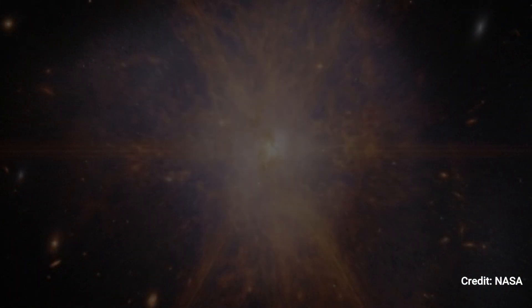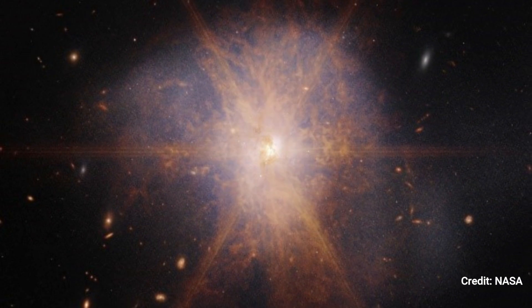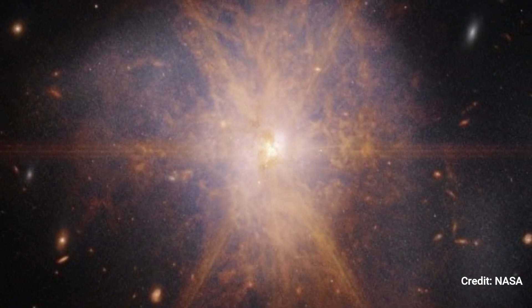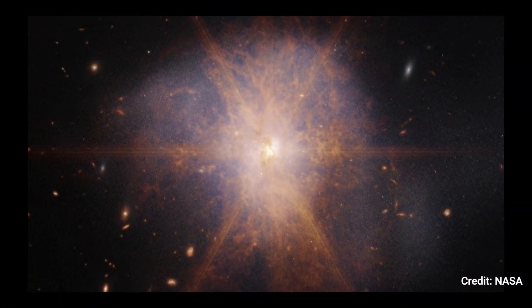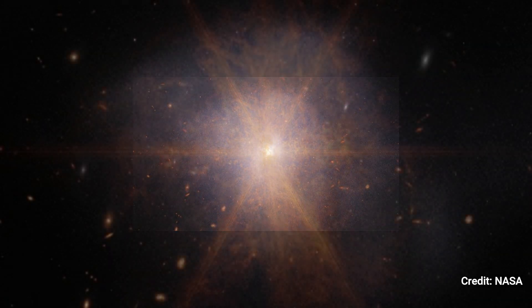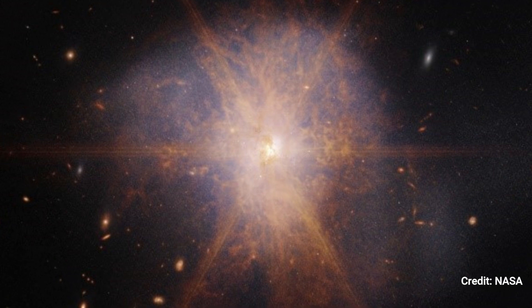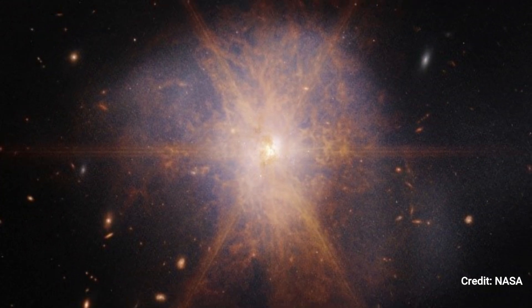It is an ultra-luminous infrared galaxy with more than a trillion suns of brightness. Our Milky Way galaxy in comparison has a far lower brightness of roughly 10 billion suns. ARP 220 is the 220th item on Halton Arp's Atlas of Peculiar Galaxies and is located 250 million light-years distant in the constellation Serpens, the Serpent.